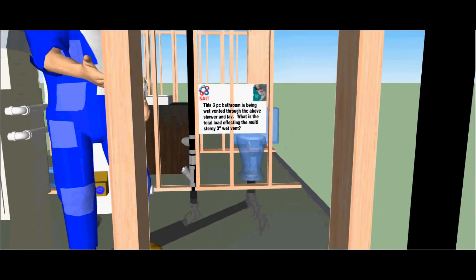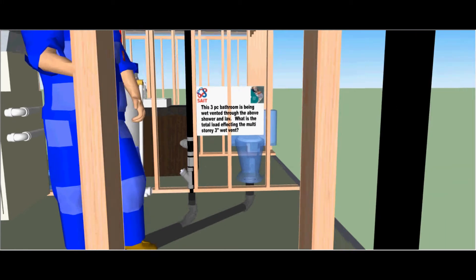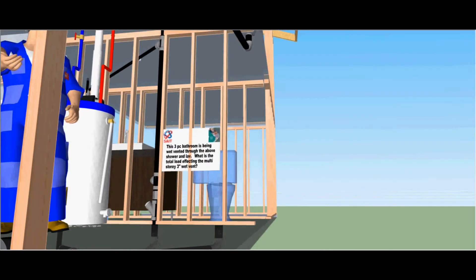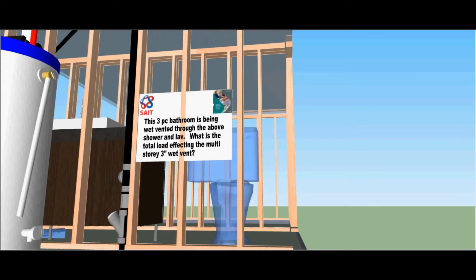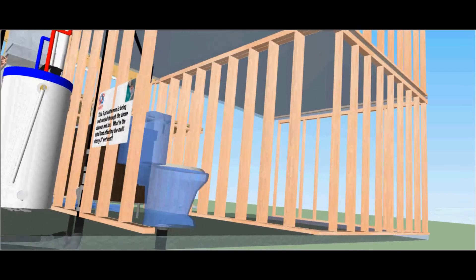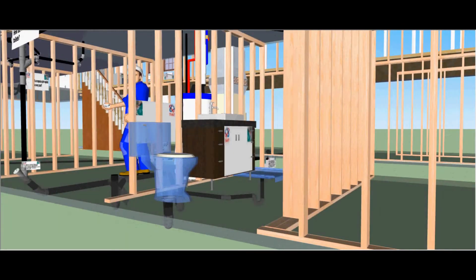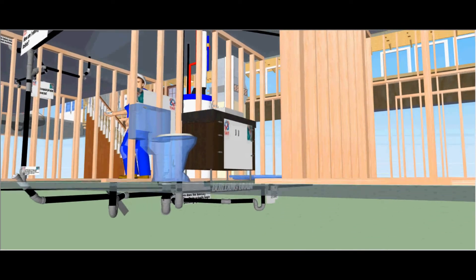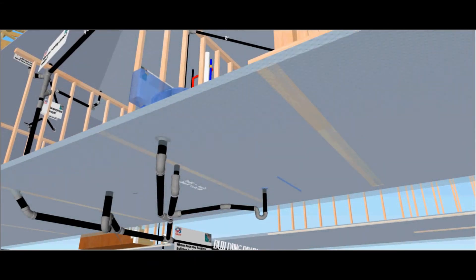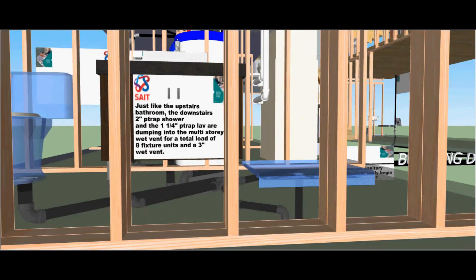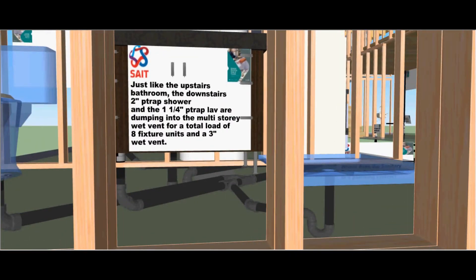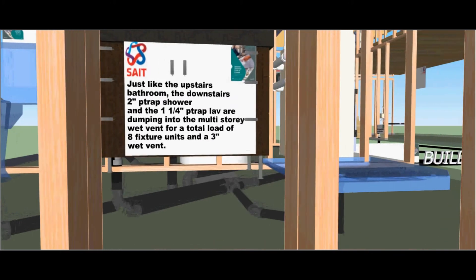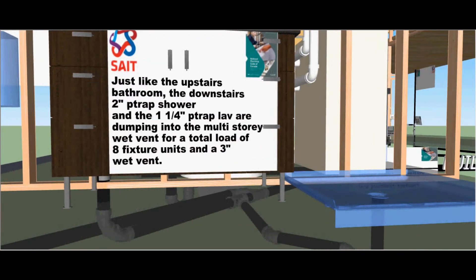Now we are going to run down to the 3 piece bathroom that is being wet vented through the shower and lav above. What is the total load affecting the full multi-storey wet vent? So in other words, this 3 piece bathroom is being wet vented through the shower and the lav above. As you can see here, we have a horizontal wet vent in the basement with the toilet being the last connection, a 2 inch shower and an inch and a quarter lav. Just like the upstairs bathroom, the downstairs 2 inch P-trap shower and the inch and a quarter P-trap lav are dumping into the multi-storey wet vent for a total load of 8 fixture units and a 3 inch wet vent.